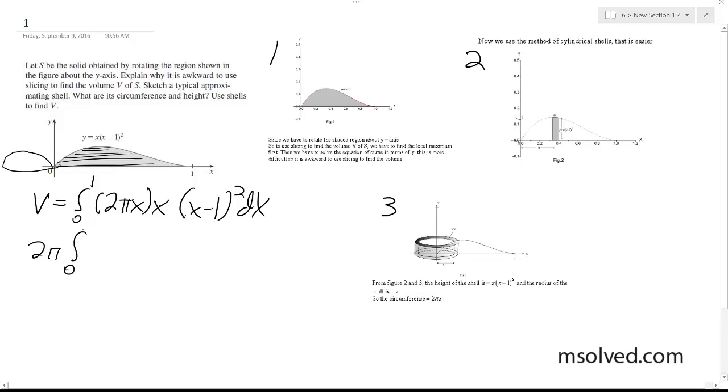So we're going to have 2π times the integral from 0 to 1 of x²(x² + 1 - 2x) dx.